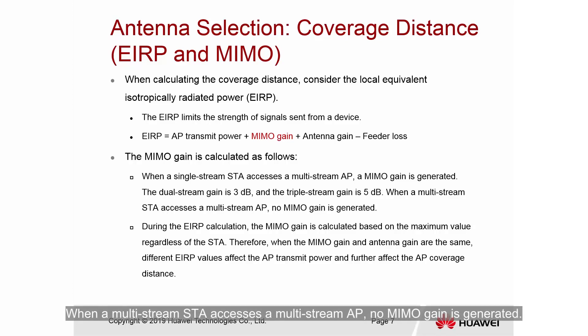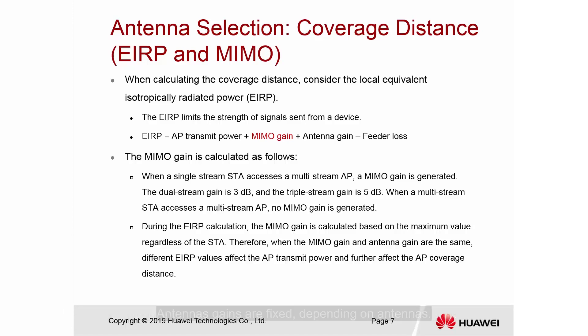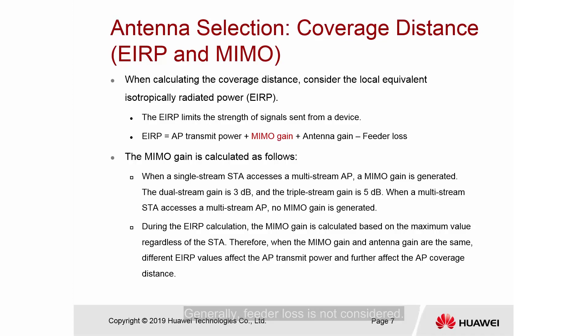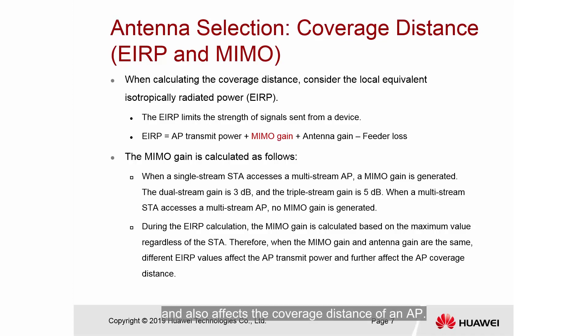When a multi-stream STA accesses a multi-stream AP, no MIMO gain is generated. Antenna gains are fixed depending on the antenna. Generally, feeder loss is not considered. In summary, EIRP is subject to limits in different countries and also affects the coverage distance of an AP.